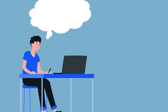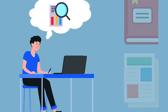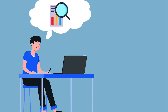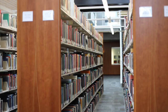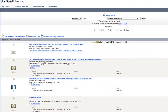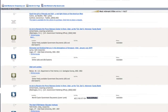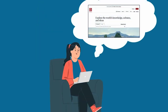In your English 1010 class, you will be working on assignments that require you to do research. This research will involve locating sources such as books and articles that may be referred to as scholarly or peer-reviewed. The library houses millions of these information sources, both physically and digitally, that you can use in your research. A great place to start your research is in the library databases.